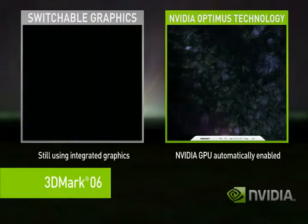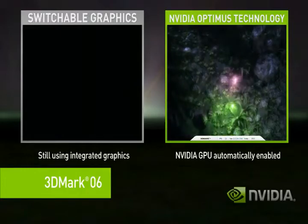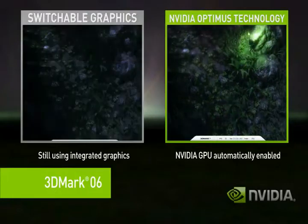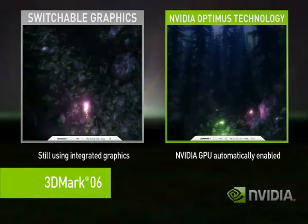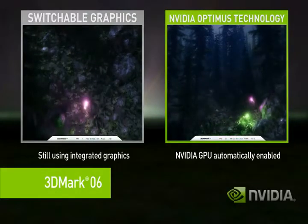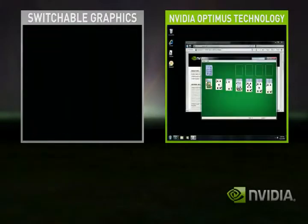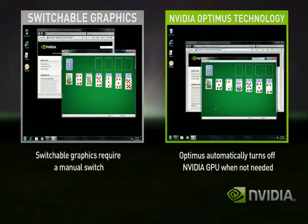Optimus, on the right-hand side, when it starts a complex application, it automatically uses the discrete GPU. The performance difference between the two is easy to see. Even better with Optimus, when you go back to your basic applications, the discrete GPU automatically turns itself off and you get great battery life.